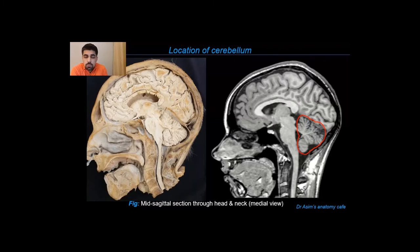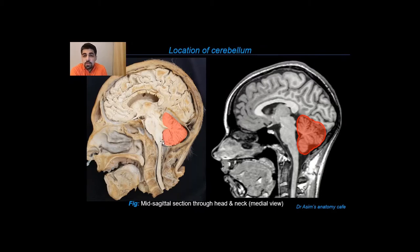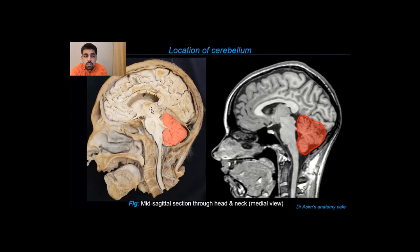Zooming into the cerebellum: it is the posterior relation of the brainstem and is situated inside the posterior cranial fossa. It is covered by the tentorium cerebelli — a partition of dura mater forming the roof of the cerebellum — making it an infratentorial structure. A diamond-shaped space, the fourth ventricle, is bounded by the cerebellum at the back and the pons and medulla oblongata in the front. The fourth ventricle connects above with the third ventricle through the cerebral aqueduct and continues down into the spinal cord as the spinal canal.